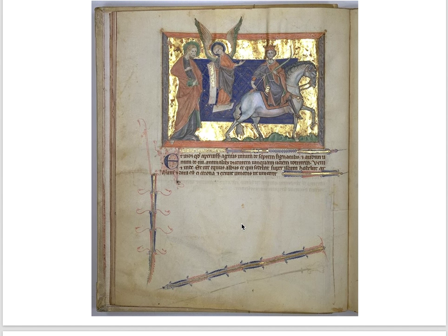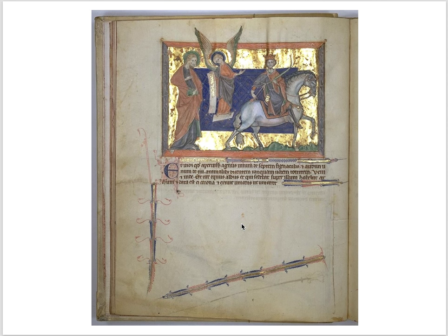In the Book of Revelation, a series of horsemen appear to bring about destruction. Here is an image of John being shown the first horseman by the angel, giving us a sense of left-to-right storytelling. John points toward the horseman while the angel explains. The angel holds a scroll with text identifying this figure as the first horseman. There are lots of ways in which text is integrated into these illustrations in a very comic book kind of way.